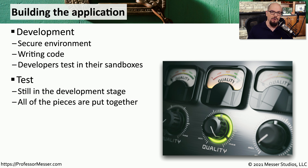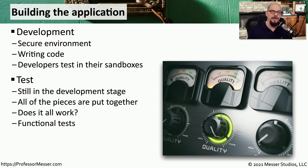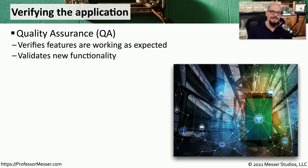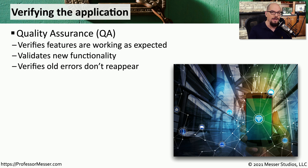The testing environment is a bit more formal. The application developers have now created different aspects of the application and are bringing all of that code together to see how the different parts react with each other. This is the phase where developers check if the features and functions are working as expected. Once they feel the application is working correctly, they hand it off to the QA team — the quality assurance team. Since QA is outside the scope of the development team, they can really put the application through its paces. They test new features, verify new capabilities are working, and make sure old errors that were previously fixed are still corrected. Too often, new software accidentally re-enables old bugs, and it's up to the QA team to prevent that from happening.